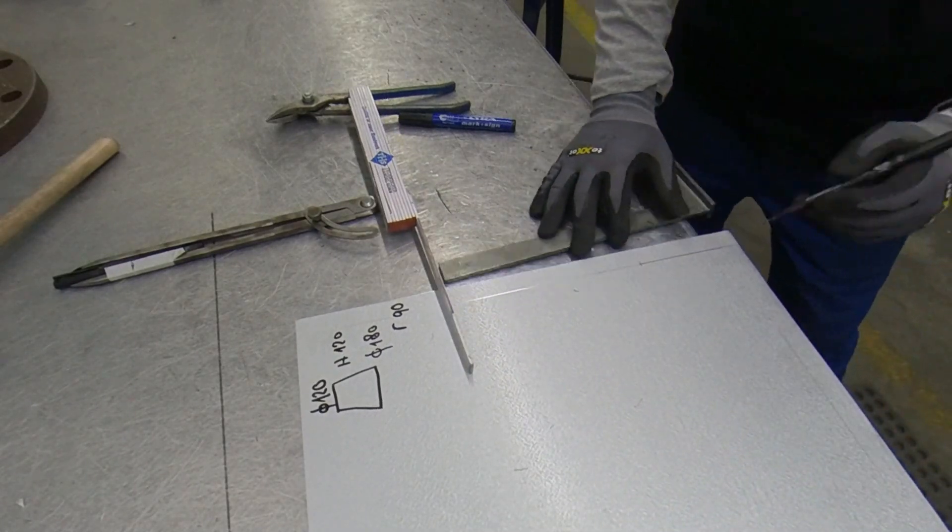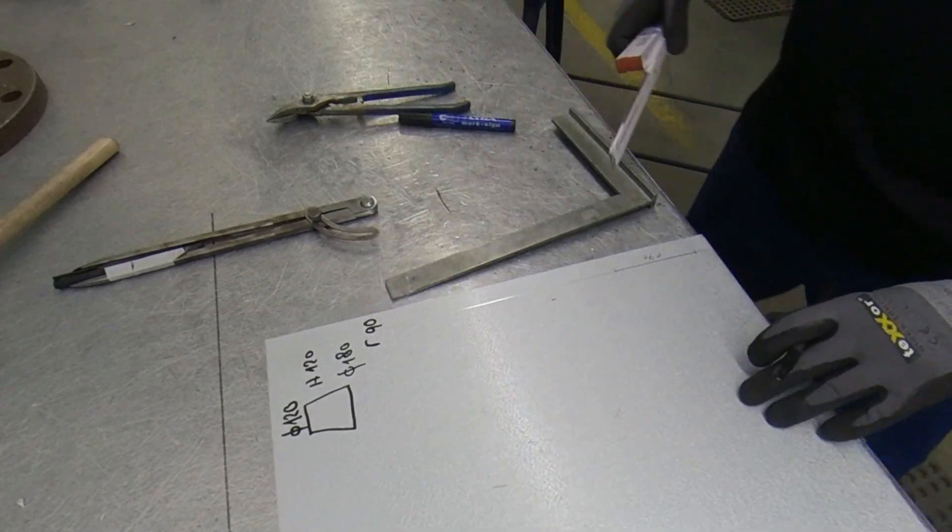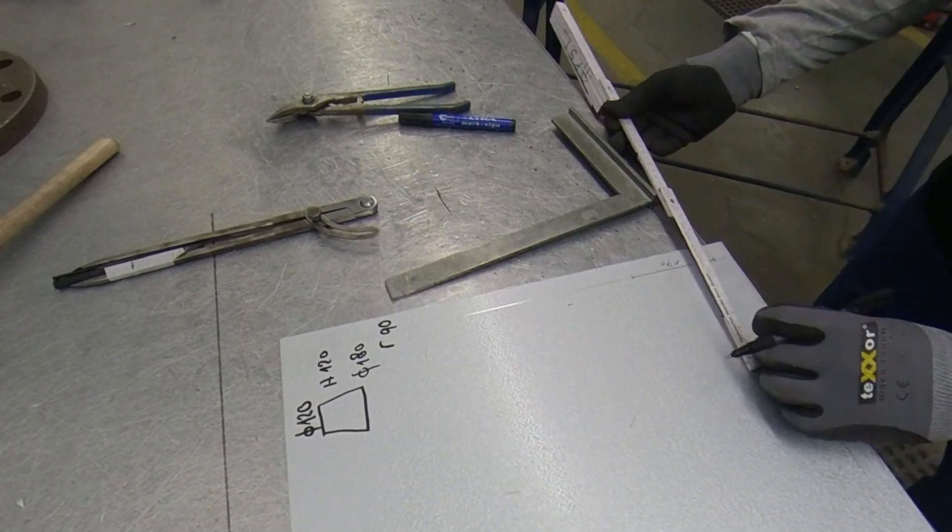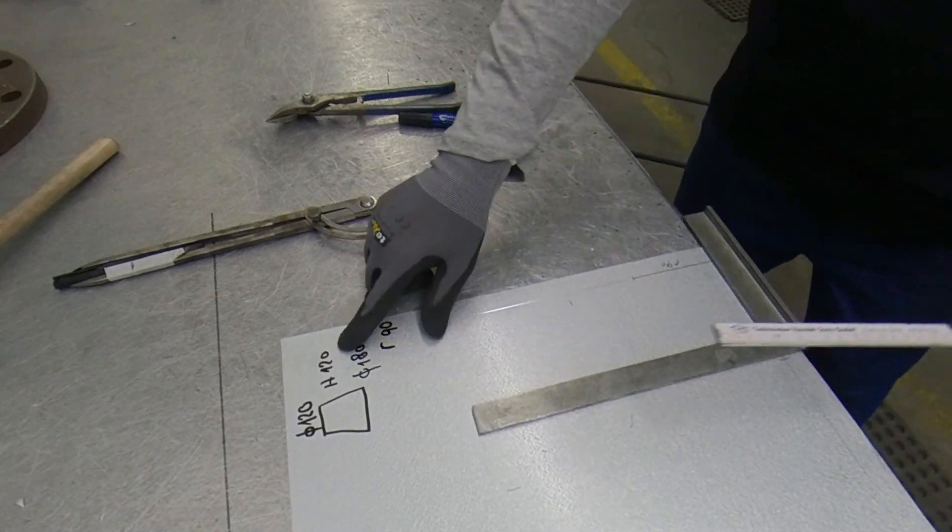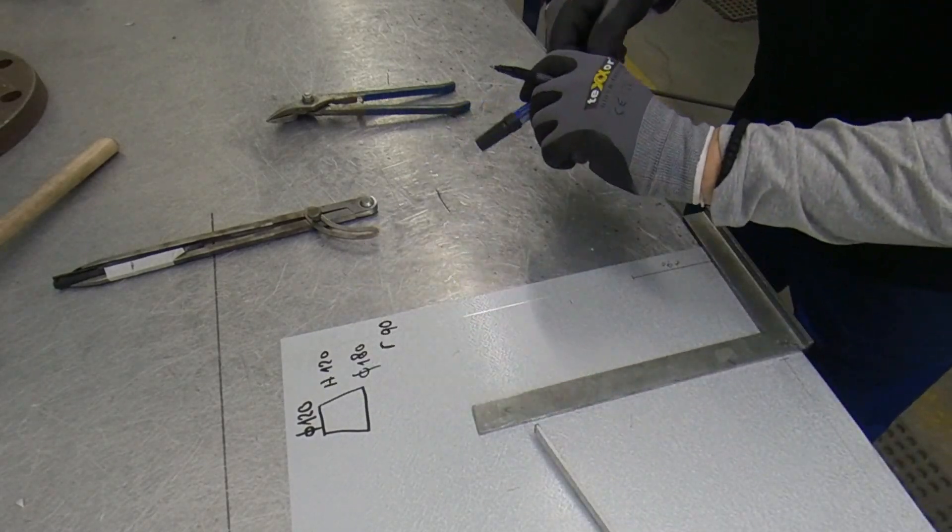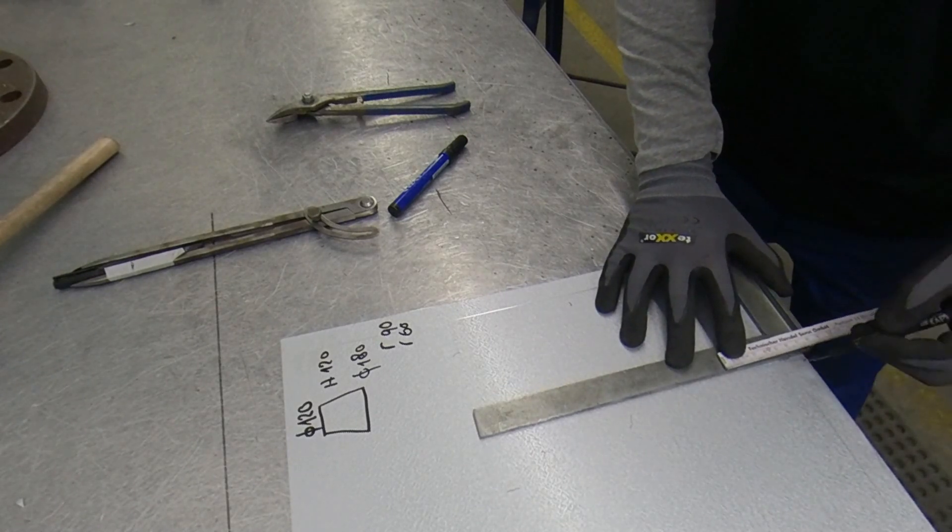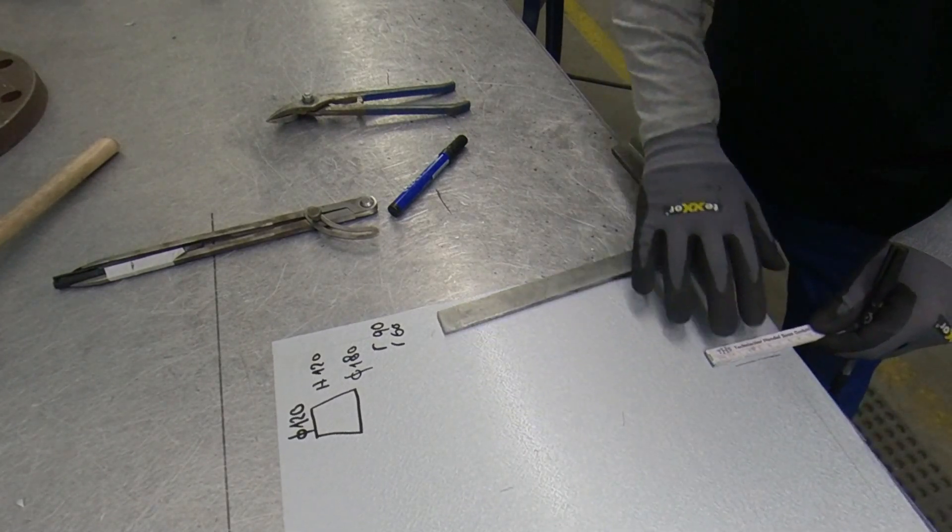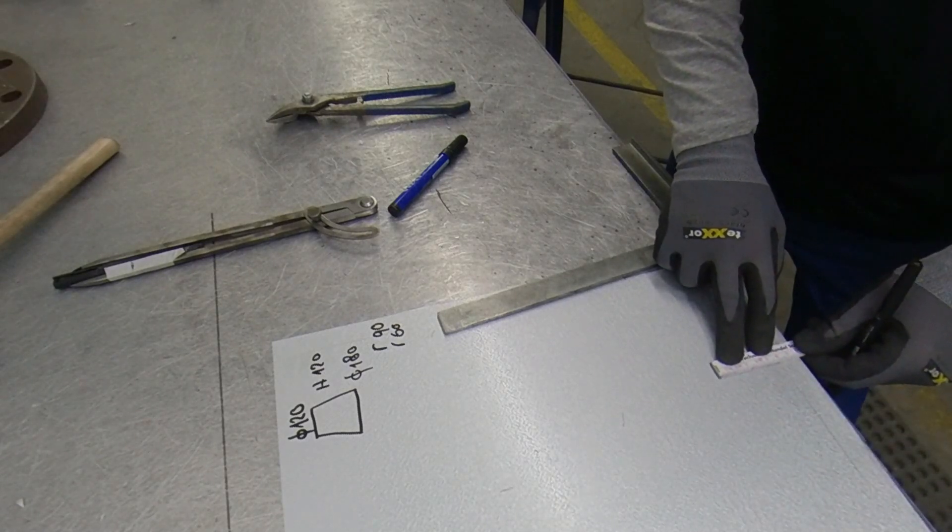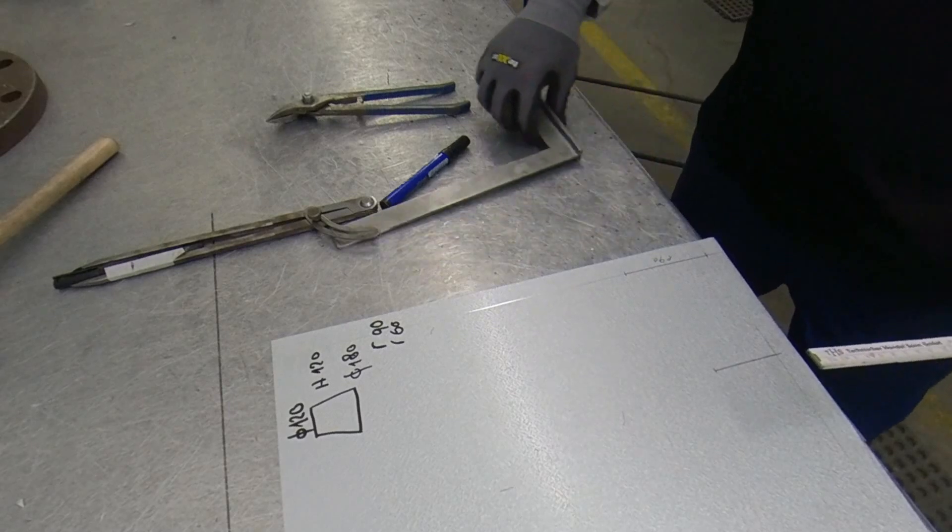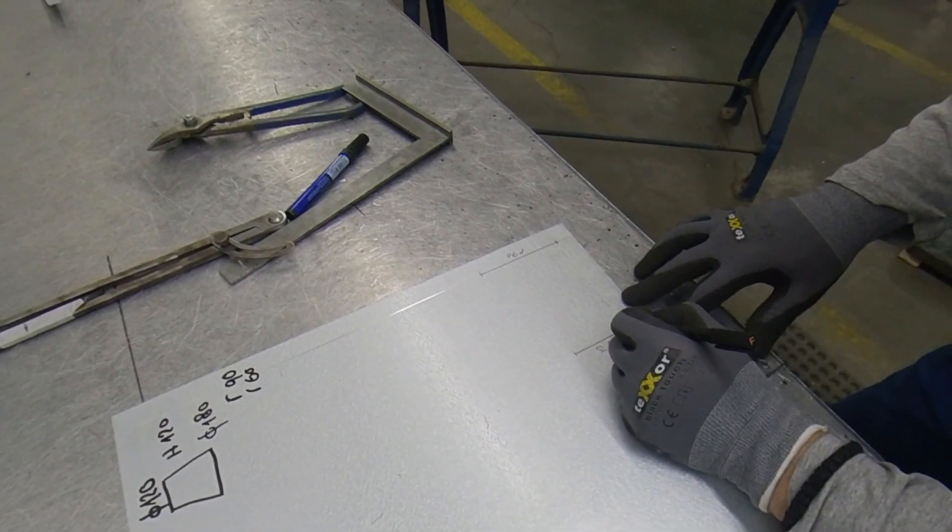So this is from here to here, we have 90 radius. Then it's 120 high, so we go 120 up. Diameter 120 is a radius of 60, so we go 60.